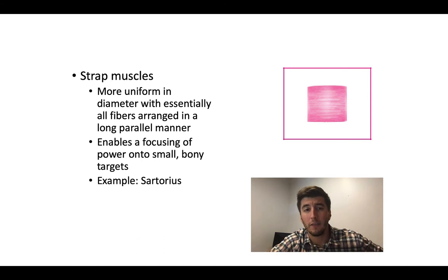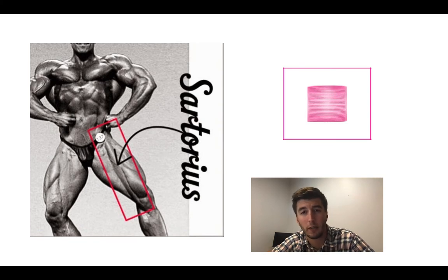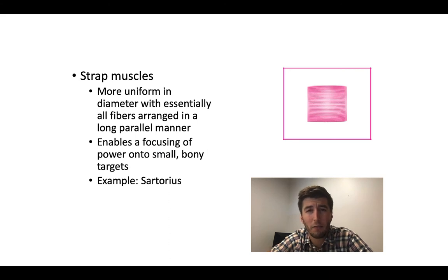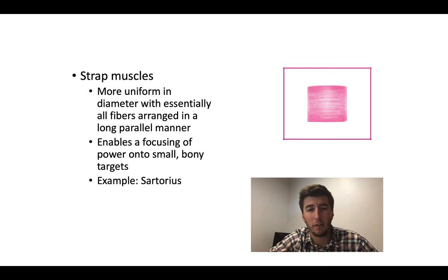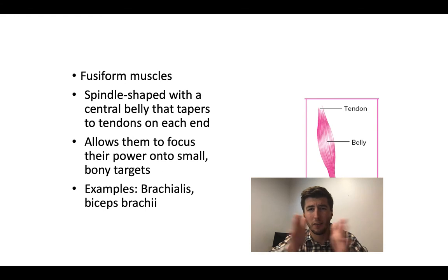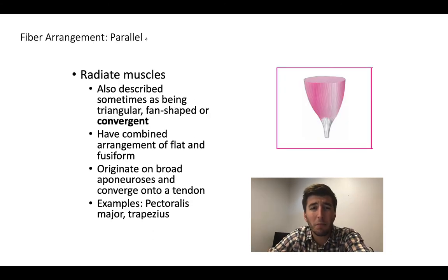Another parallel muscle group is the strap muscles. If you've ever seen a really shredded bodybuilder, the sartorius is actually visible when they flex their quads — it looks like it's strapping the quadriceps into the leg. Strap muscles are fairly uniform in diameter, running the long length of the muscle fiber spanning quite a distance with targets on small bony points. They're similar to fusiform muscles, but where a fusiform has a bulbous belly, strap muscles remain the same width all the way through.